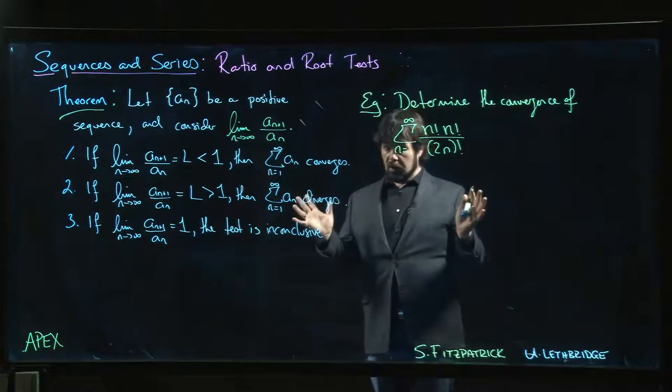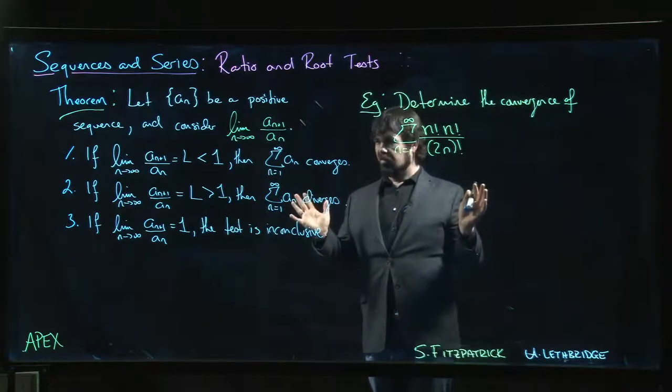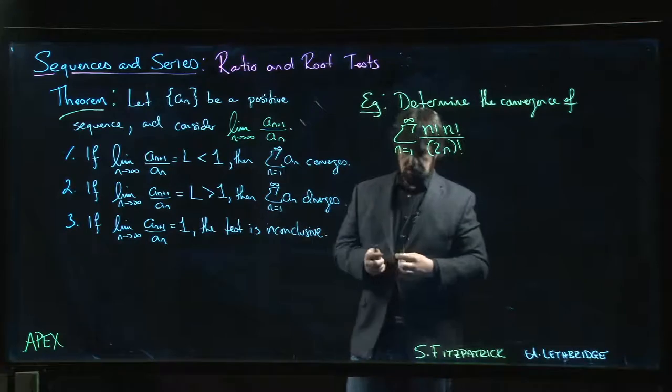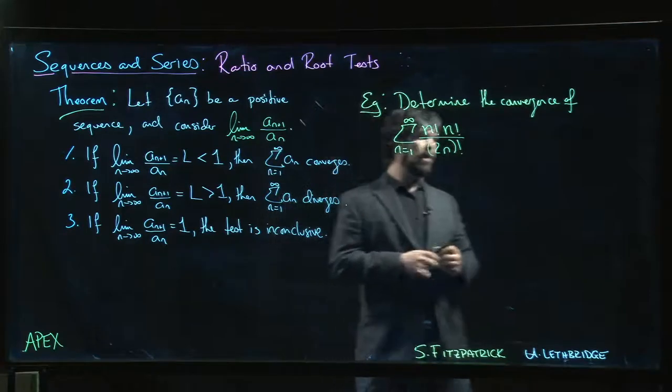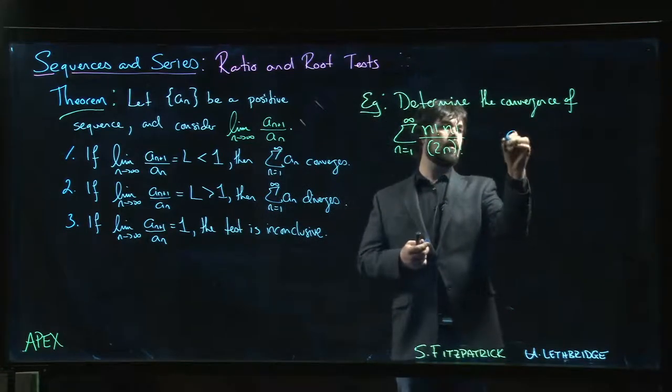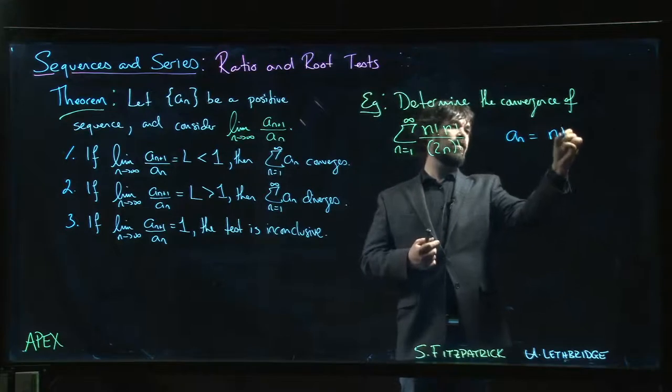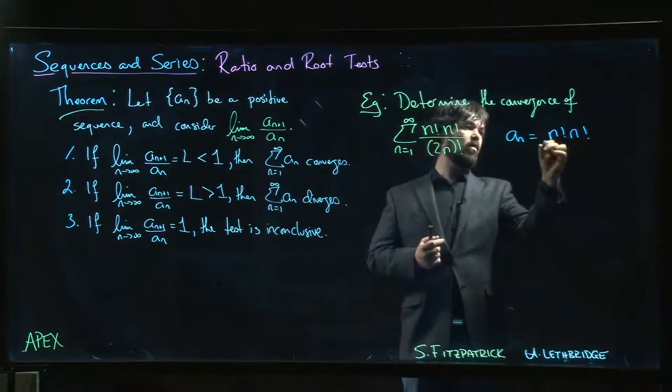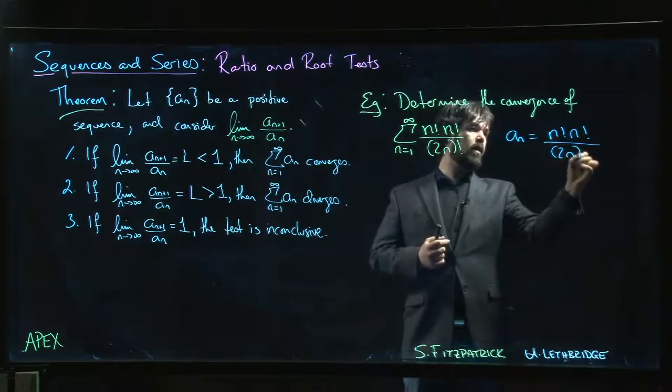Seems like maybe it's going to work out for us, but let's apply the ratio test and be sure. So let's see. A_n in this case is n factorial, n factorial, 2n factorial. And so let's look.